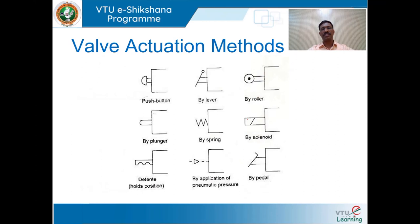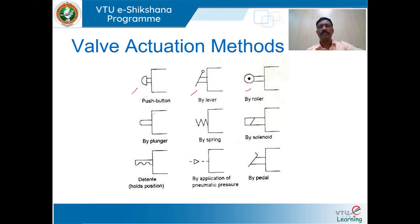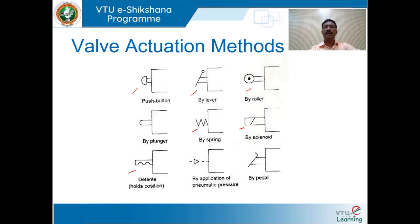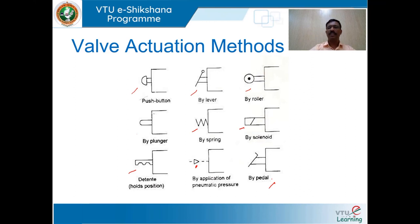We shall discuss valve actuation methods — the different ways valves are actuated. The valve can be actuated with a push button, lever, roller, plunger, or spring. By solenoid — passing electric current to a coil and energizing it. Also by detent position, by pneumatic pressure shown as a closed hollow arrow, or by pedal.